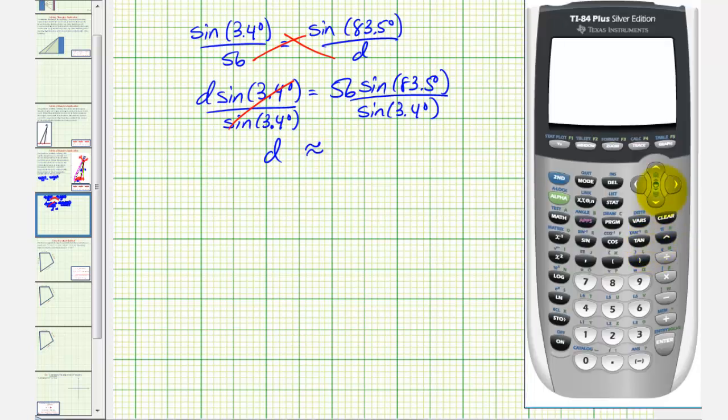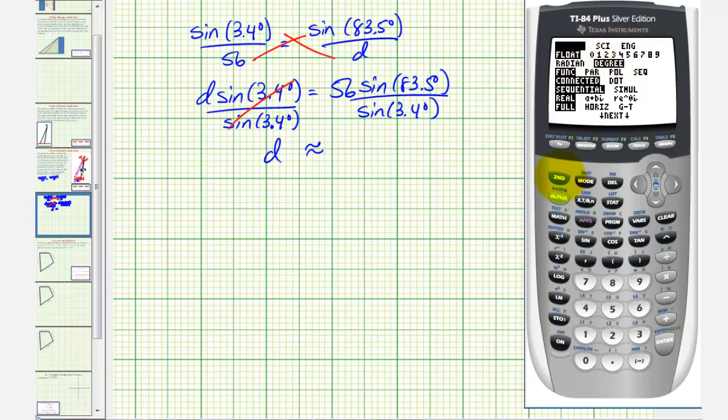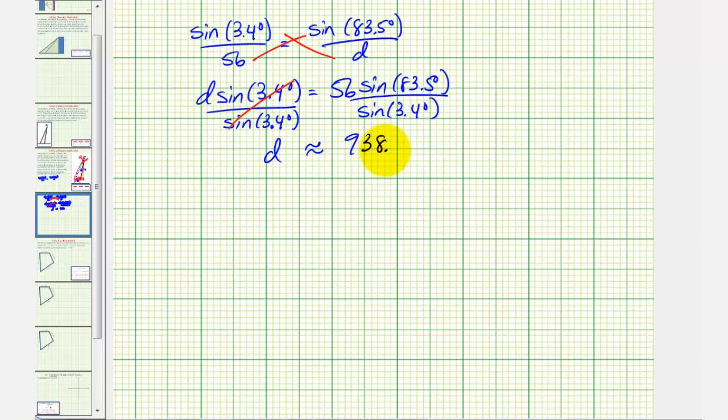Let's first make sure we are in degree mode, so we'll press the mode key. Notice how we are in degree mode, so go back to the home screen, and we'll enter 56 sine 83.5 degrees, in parentheses, divided by sine 3.4 degrees, which gives us approximately 938.18 miles. So this is the answer to the first question.